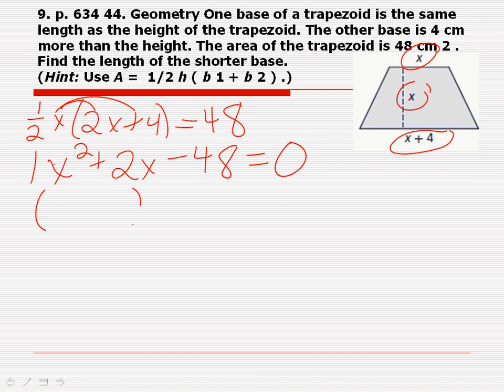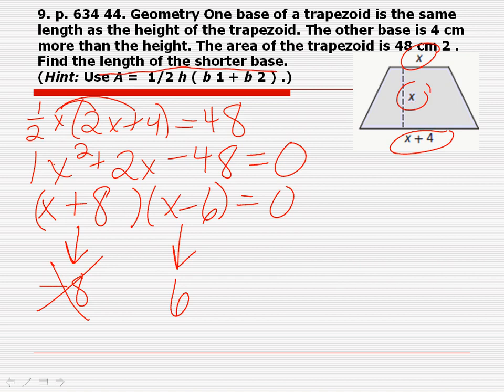Okay. Then I need to factor. This is not slip and slide. x, x. Multiply to give me 48. It's negative. 6 and 8. Which one's positive? 8. 8's positive. 6 is negative. I know what y'all are thinking. You're thinking ahead. Yeah. This solution gives me negative 8. And I'm going to chunk it in the trash because my distance can't be negative. This answer gives me 6. We had to find the length of the shorter base. Did we do that? Yes. It's 6.